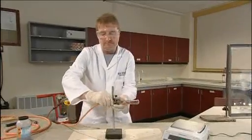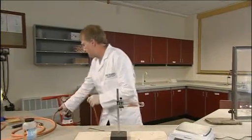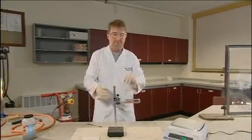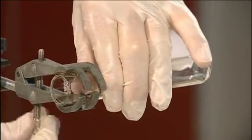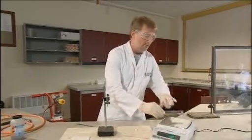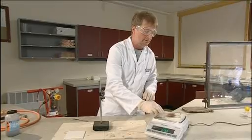We now blow out the flame. Remove the hydrogen delivery tube and turn off at the cylinder. And re-weigh the tube, which now contains copper.